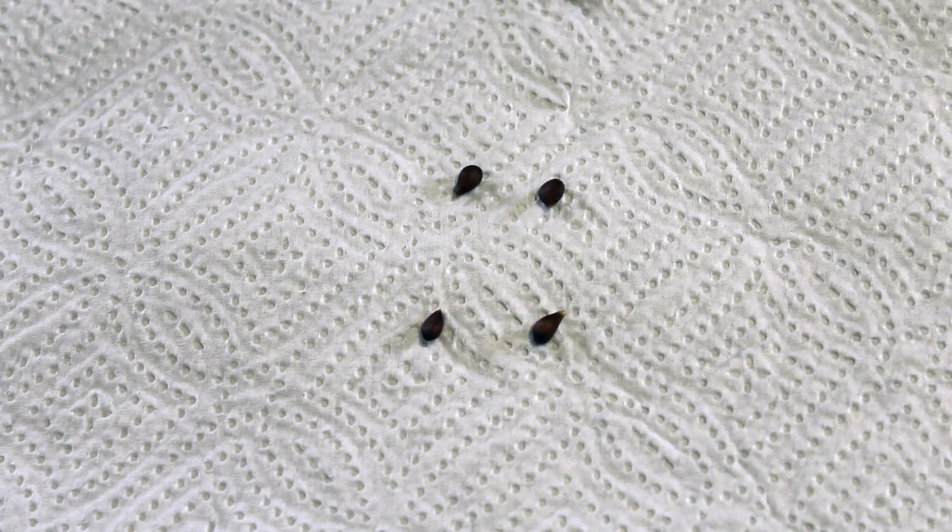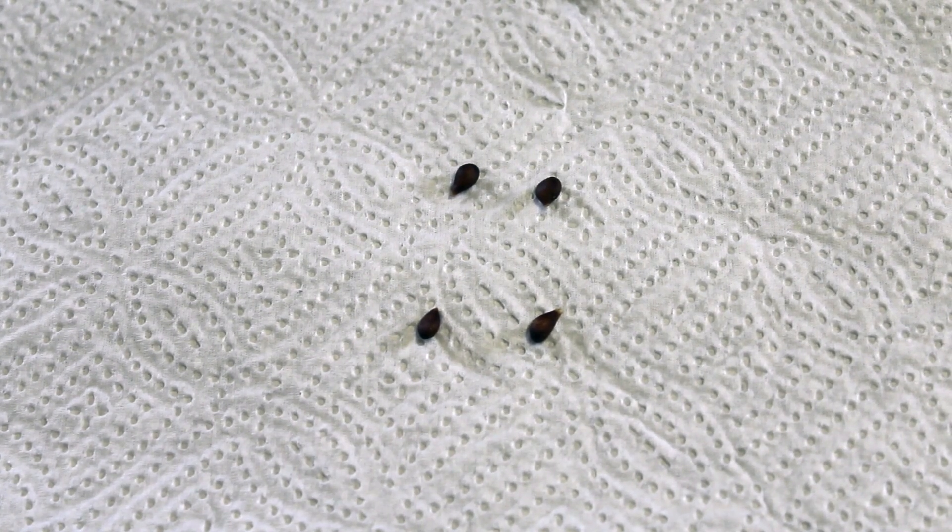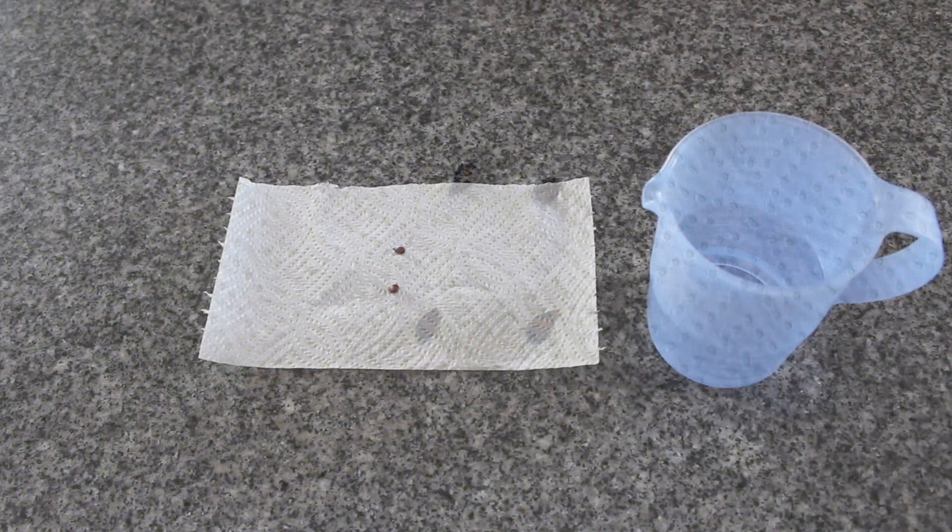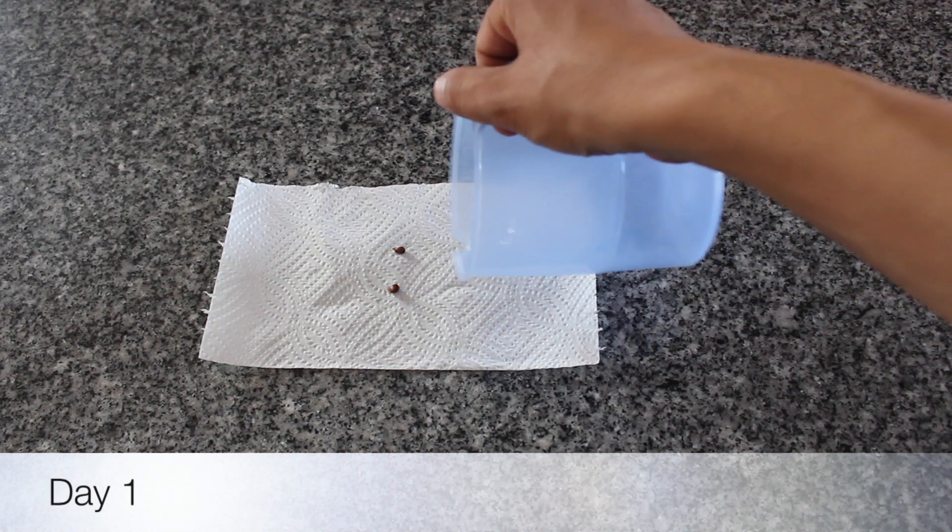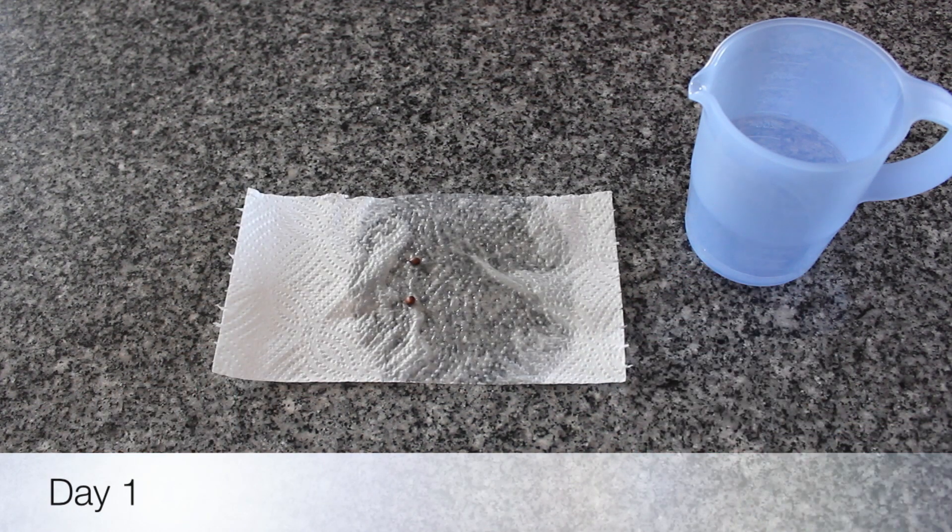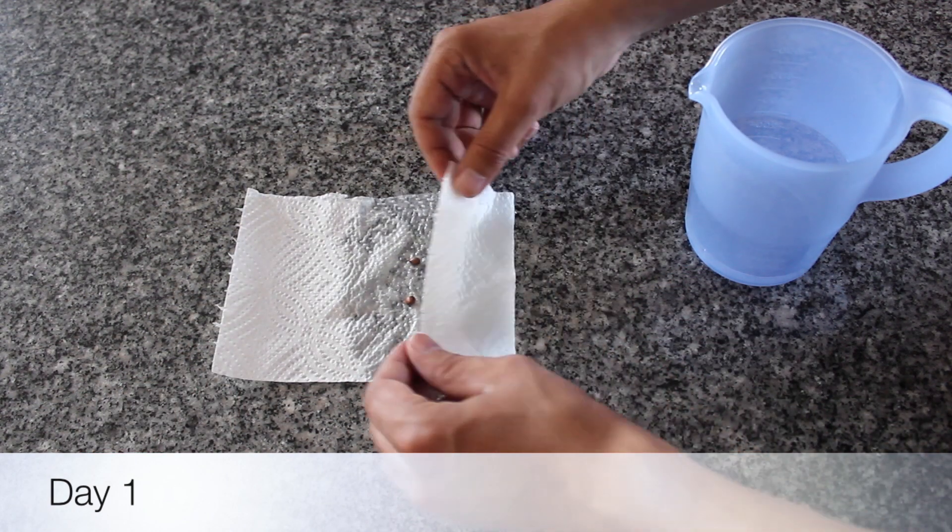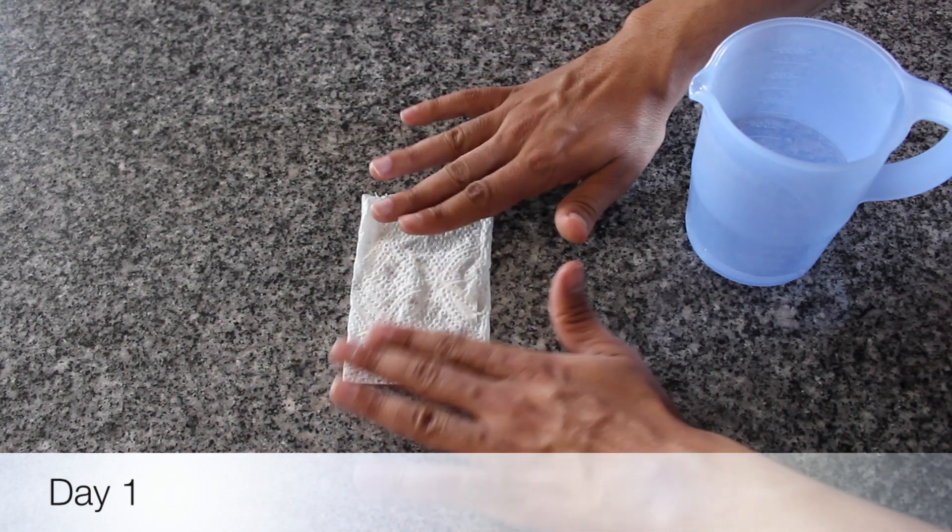This is how the seed looks. Place the seeds on a paper towel, then pour some fresh water over it. Now you can close the paper towel, covering the seeds completely.